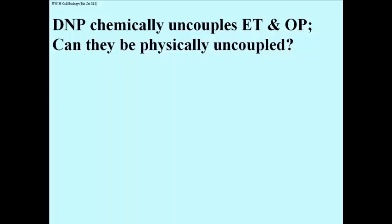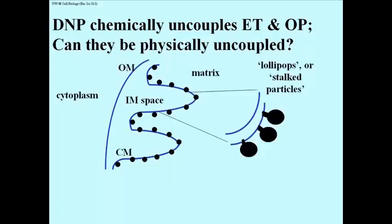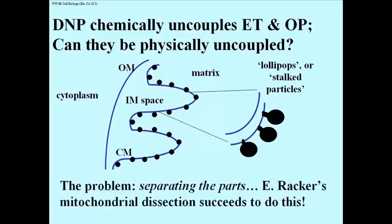Ephraim Racker was experimenting with ways to dissect mitochondria and analyze the functions of the parts. This slide is a representation of the cristae membrane from electron micrographs, which suggested that the inner surface of the cristae membrane was coated with particles. The separation of the parts took Racker a long time to solve, but eventually his mitochondrial dissection was successful.